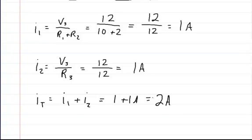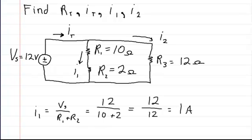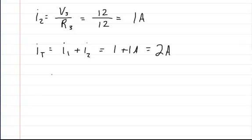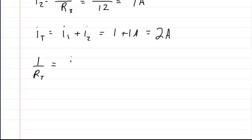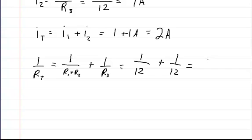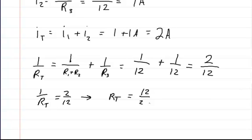So you have 2 amps — that's the total current. There are a couple of ways we could solve for the total resistance. We could use the parallel method, where RT equals 1 over (R1 plus R2) plus 1 over R3. R1 plus R2 equals 12 ohms and R3 equals 12 ohms, so it's 1 over 12 plus 1 over 12, which gives 2 over 12. Flipping that, RT equals 12 over 2, which equals 6 ohms.